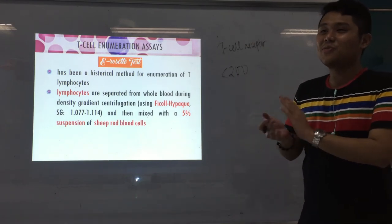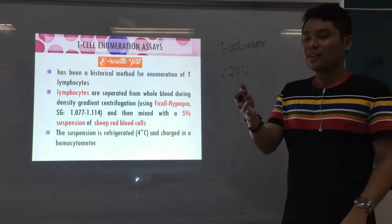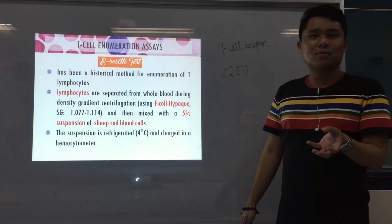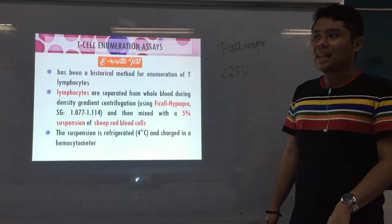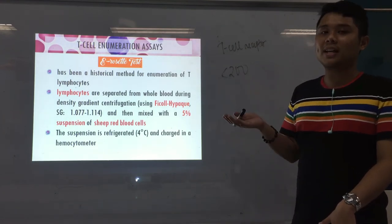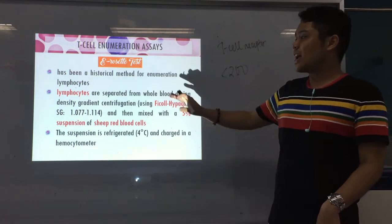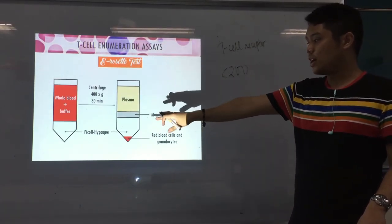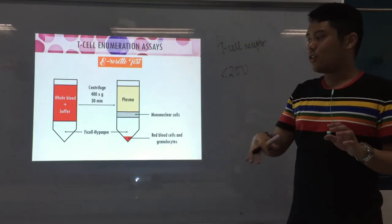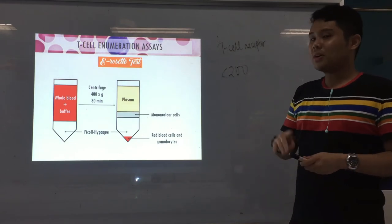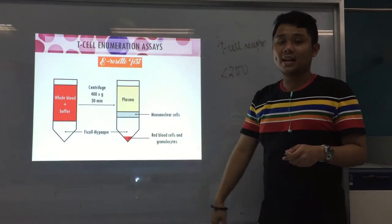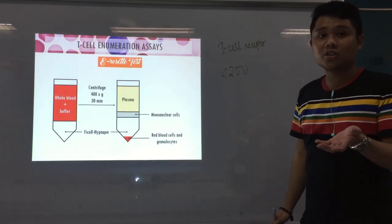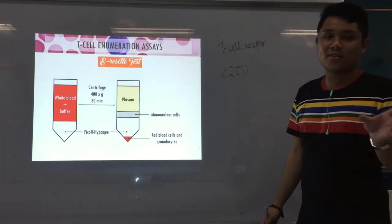You then mix a suspension of sheep RBCs. The suspension is refrigerated and then charged into a hemocytometer. Centrifuge at 400 times G for 30 minutes to separate the plasma from the Ficoll-Hypaque and the red blood cells and granulocytes. What remains is the buffy coat, which contains your mononuclear cells — your lymphocytes, T-cells, and B-cells.